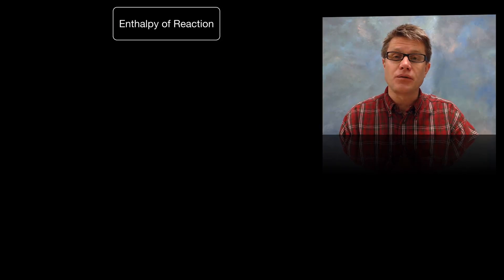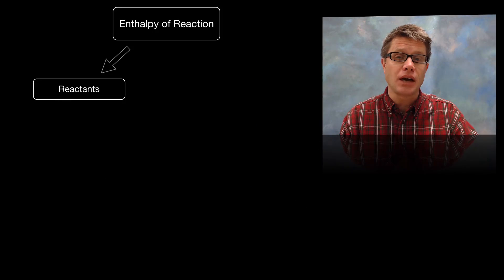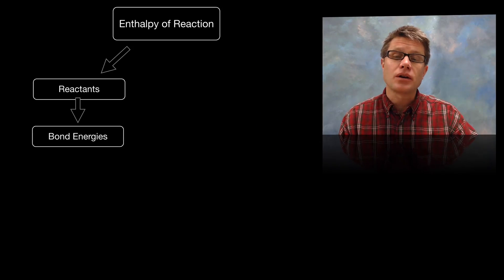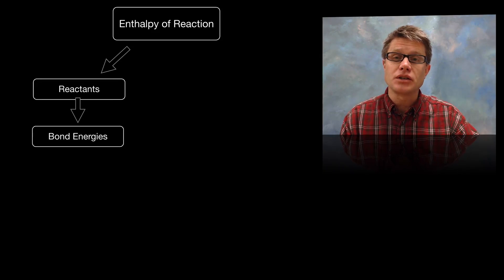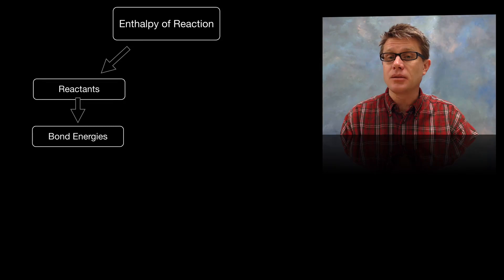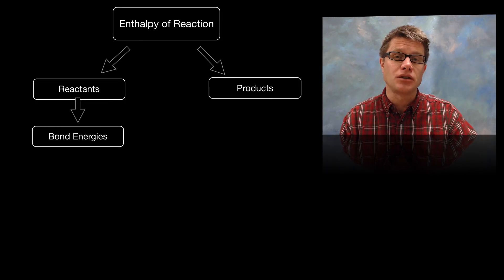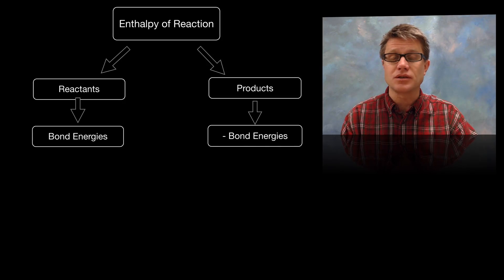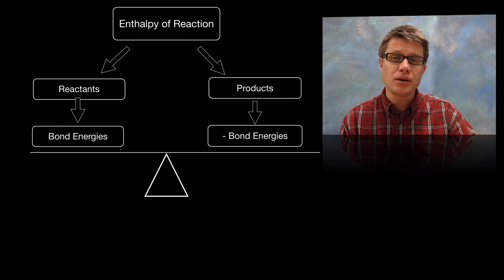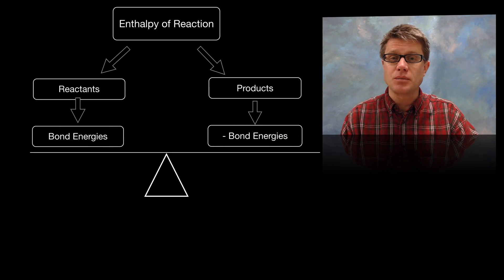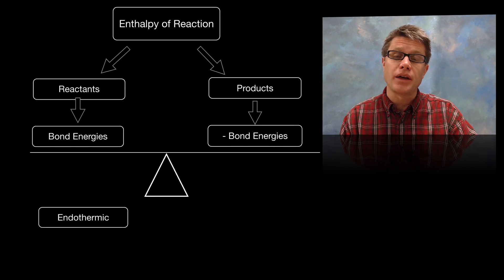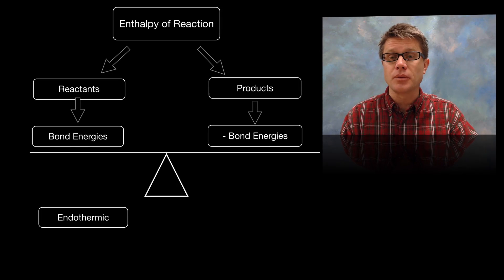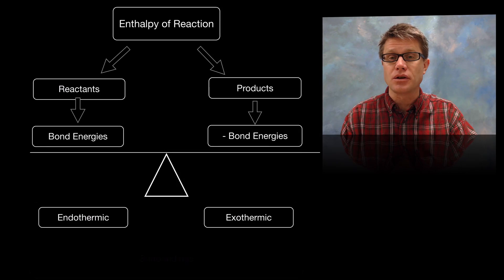In the enthalpy of reaction, we look at the reactants and what are called the bond energy — the amount of energy it takes to break the bonds in the reactants — and then the amount of energy released in the products, which is essentially the negative bond energy. You can think of putting these on a balance beam. If there's more reactant energy consumed, we call that an endothermic reaction; if there's more released, we call that an exothermic reaction.